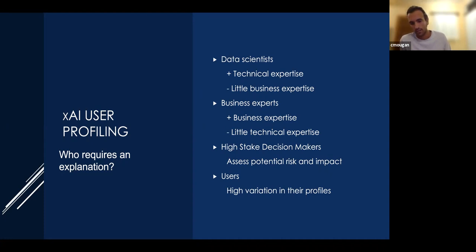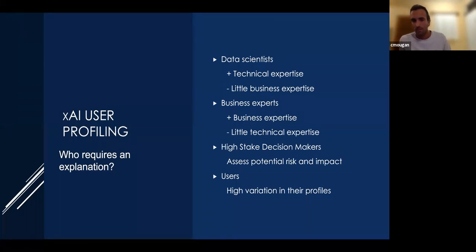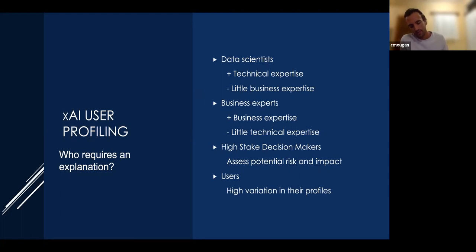First, data scientists. They are the most well-known type of user. They have high technical expertise and tend to have knowledge in mathematics, computer science, and software development, but they do not understand the business or the economics. So the explanations they are looking for are much more technical than business-oriented.